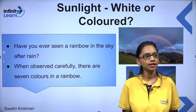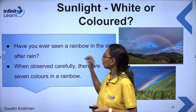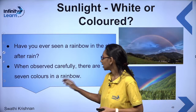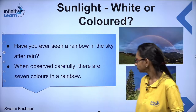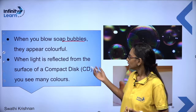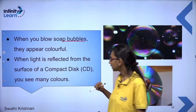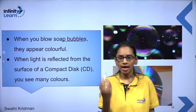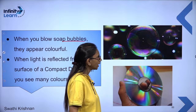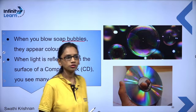Many of us have seen a rainbow — this is the last part of the chapter on dispersion. When you observe carefully, there are seven colors in the rainbow. Soap bubbles also appear colorful, and when light is reflected from the surface of a compact disc, you can see many colors. These are examples of dispersion. If you take a glass prism and allow a narrow beam of light to fall on one face of the prism, then let the light coming out fall on a white sheet — you will observe that the light splits into seven colors.